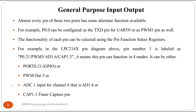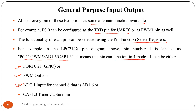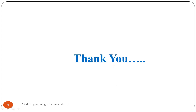Almost every pin of the two ports has an alternate function available. For example, P0.0 can be configured as TXD, the transmission pin for UART0, or as a PWM pin. The functionality of each pin is selected using the Pin Function Select Register. As shown in the pin diagram, pin number 1 labeled P0.21 can have four modes: P0.21, PWM5, AD1.6, or CAP1.3. We can select one function at a time using this register.